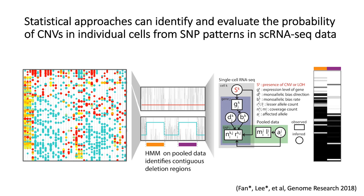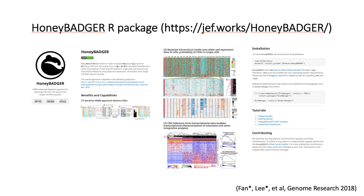To systematically identify and evaluate the probability of CNVs in individual cells from such SNP patterns in single cell RNA sequencing data, we applied a hidden Markov model to identify putative regions affected by CNVs, and then applied a Bayesian hierarchical model that takes into consideration the sparse coverage and monoallelic detection rates in order to infer the probability of each CNV within each single cell. We packaged these statistical approaches into an open-sourced R software package called HoneyBadger, available on GitHub with additional tutorials and resources available on the accompanying software website.